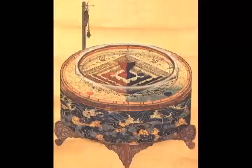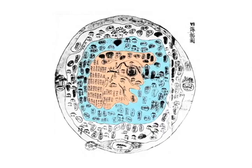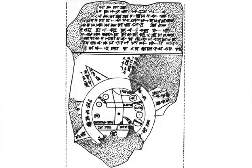This Korean wheel map shows a central continent, surrounded by a circular ocean and another circular continent. Joseph Needham, in his Treatise on Chinese Science, traces these wheel maps to India or Babylon. Here is a Babylonian wheel map.